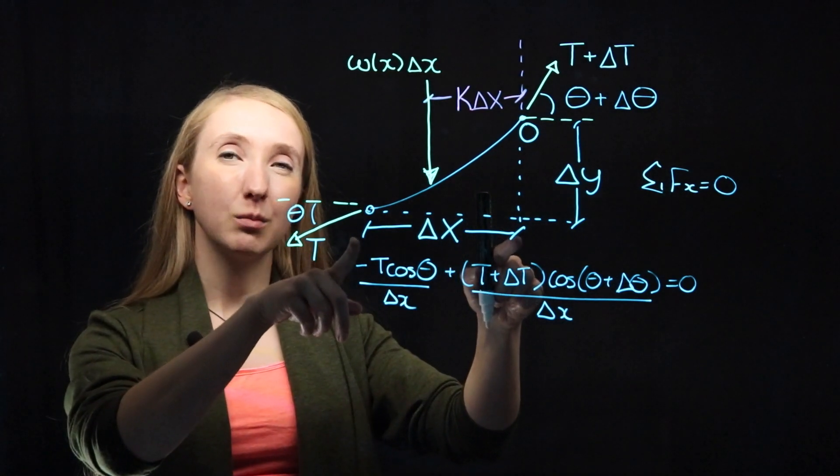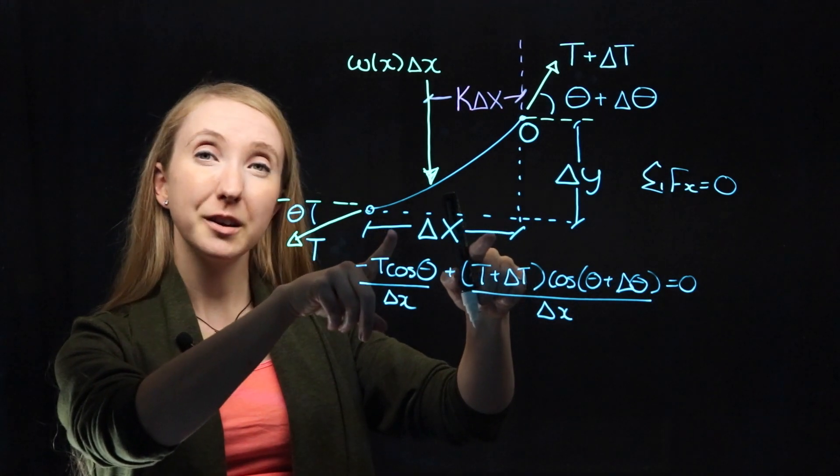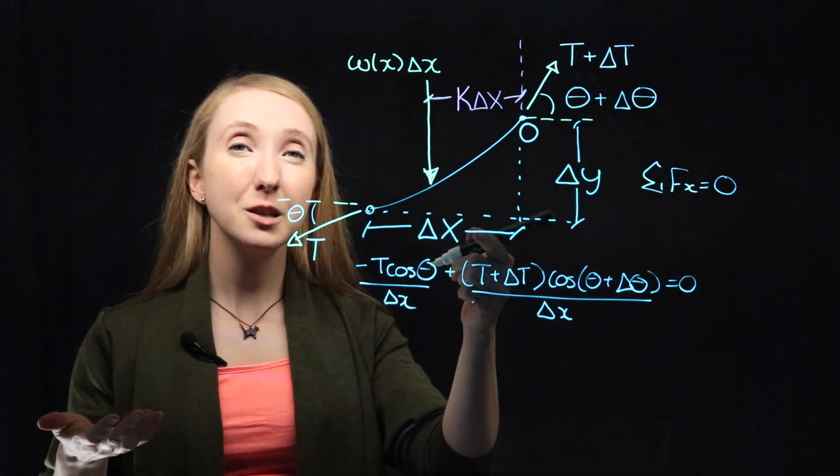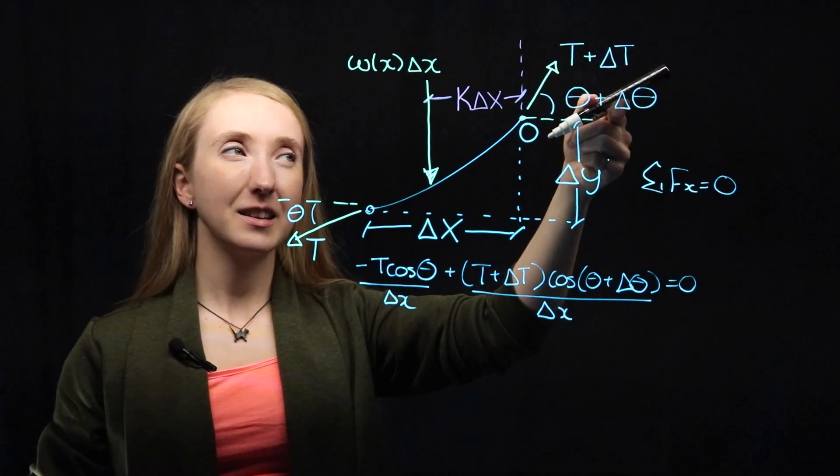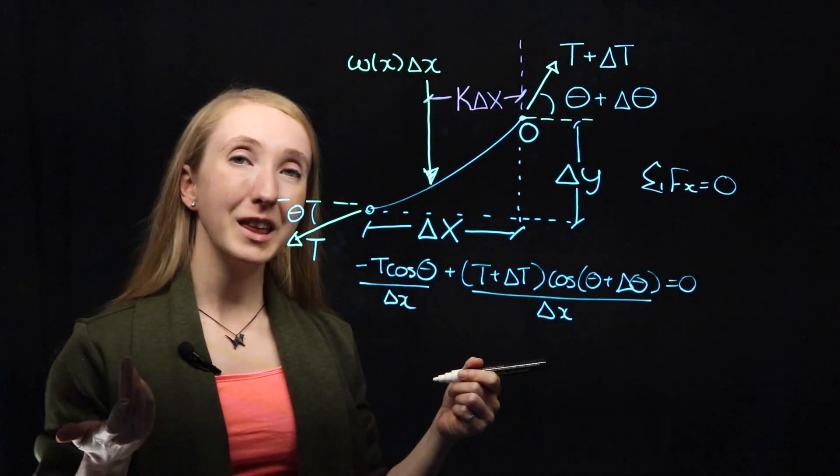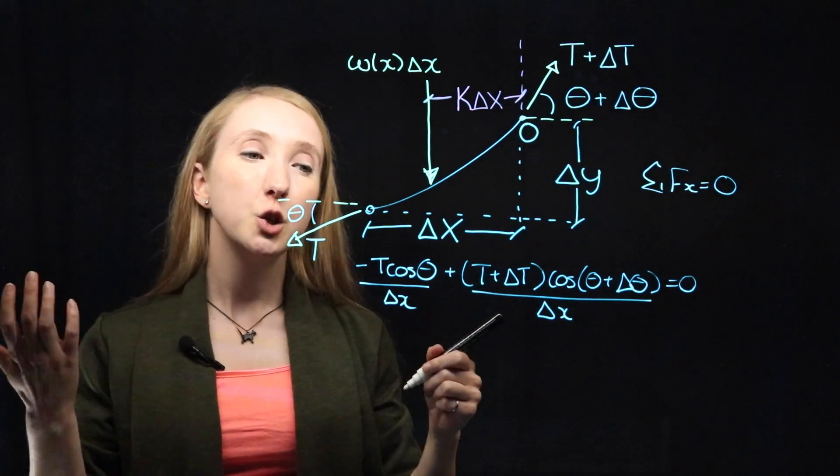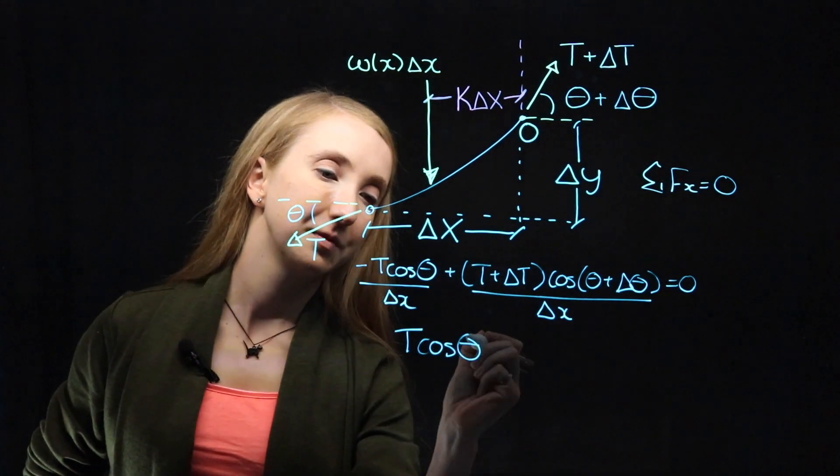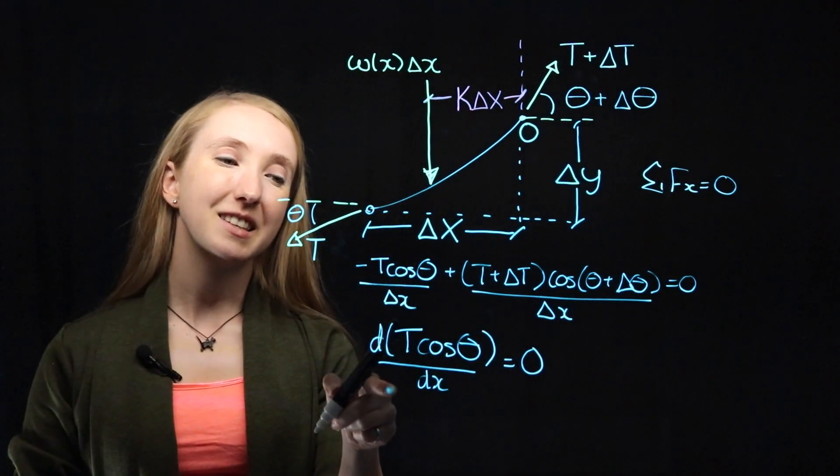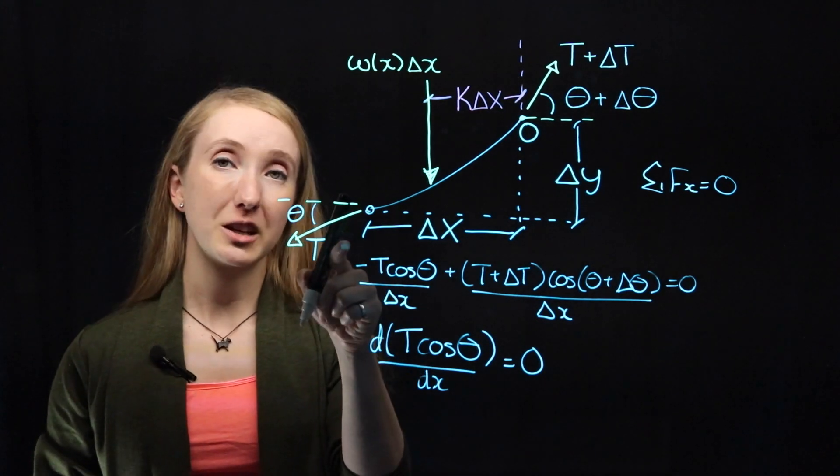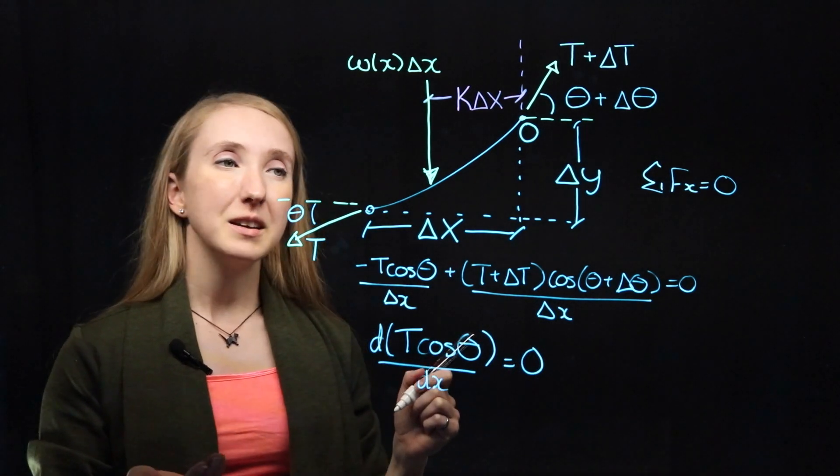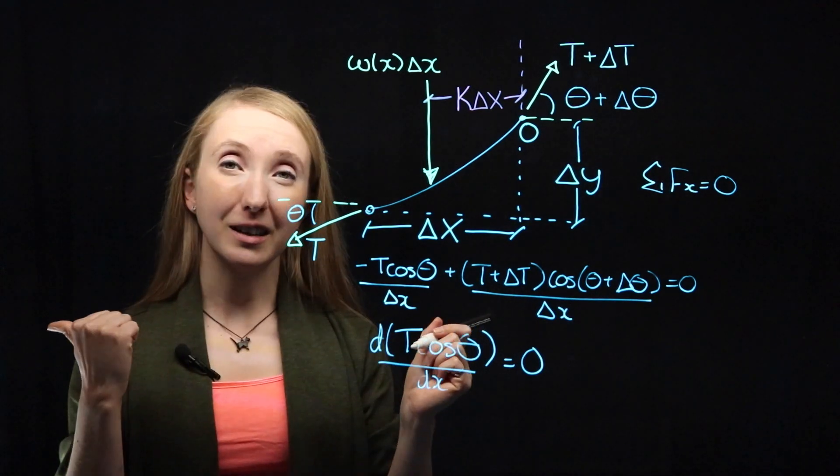And remember, we're looking at delta X as a very tiny segment, right? We kind of want to look at it as if it were a point, actually. So as delta X becomes a point, it gets smaller and smaller and smaller, it's approaching 0. So as delta X approaches 0, the change delta T and delta theta would also approach 0. So knowing that, we could simplify this statement to be, with a little calculus. What this says is that the change in the horizontal tension along our cable is equal to 0. So we would expect that, right? Because our horizontal tension is constant along a cable.